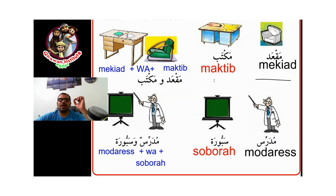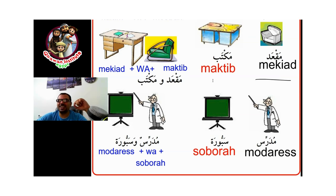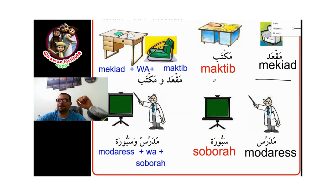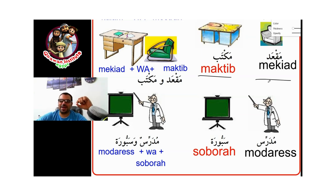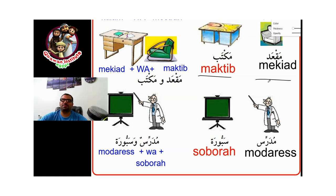The second word is called maktab, with a kaf. This one is easy. Say it again: maktab. What does it mean? Maktab. Maktab means desk.